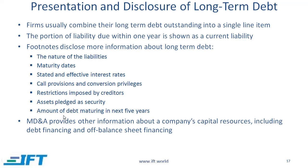Regarding presentation and disclosure of long-term debt: the current portion of long-term debt due within one year is shown under current liabilities, while the rest is typically shown as a single line item under non-current liabilities. Footnotes and disclosures provide a tremendous amount of detail about all long-term debt. Additional information can be found in the management discussion and analysis about capital resources, including debt financing and off-balance sheet financing. Off-balance sheet financing is where a company raises money but doesn't show it on the balance sheet, which happens through leases — specifically operating leases — and that is what will be discussed next.